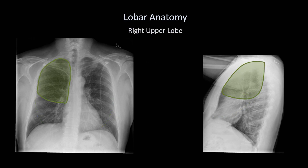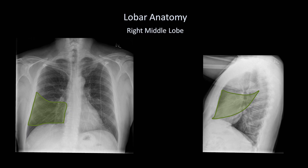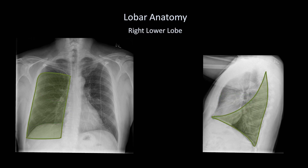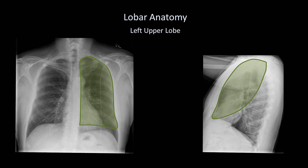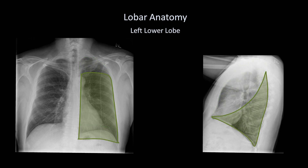The right upper lobe is located here, and the right middle lobe, most notably making a wedge shape as seen from the side. The right lower lobe not only comprises the most inferior portion of the lung, but most of the posterior surface as well, frequently extending up as high as the aortic arch. Then the left upper lobe, which anatomically would probably be better described as the left anterior lobe, and the left lower lobe, which would be better described as the left posterior lobe.